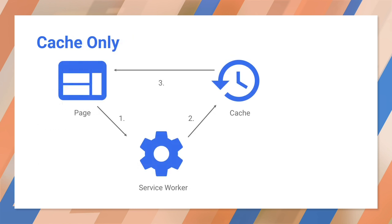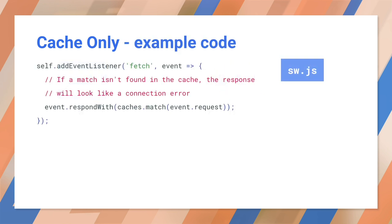The cache-only strategy only uses the cache. This might seem a bit weird, but it's ideal for anything that you consider static to a particular version of your site. You should have cached these assets in the install event, so you can depend on them being there. The code is pretty simple — you only respond to requests with matches from the cache. In a real-world application, you'd make a decision in the code as to which requests would only get a response from the cache.